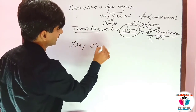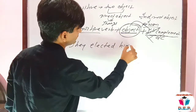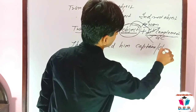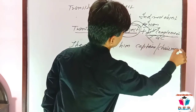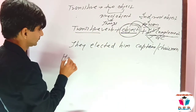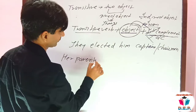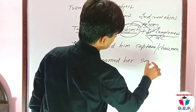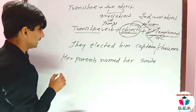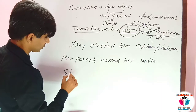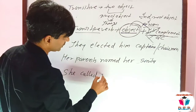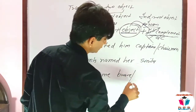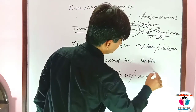For example: 'They elected him captain' or 'chairman' — captain and chairman here are OC. Another example: 'Her parents named her' — here 'her' is the object. And another: 'She called me brave.'